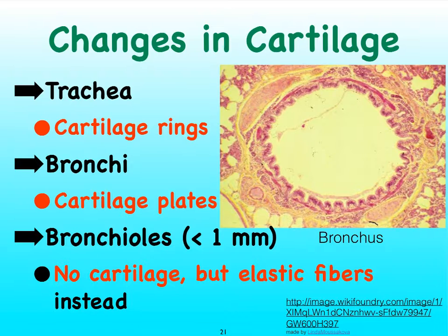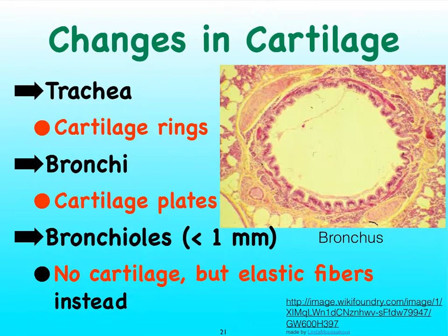We also see a change in the connective tissue, particularly the hyaline cartilage. We go from having very clear, visible-to-the-eye cartilage rings. The amount of cartilage as we go down into the bronchi begins to slowly diminish — for instance, in this picture showing a cross-section of a bronchus, we now start to see, rather than rings, just chunks or better called plates of hyaline cartilage. And by the time we get to the smaller bronchioles that are less than a millimeter in diameter, we don't have any cartilage anymore. Instead, we are starting to see much more elasticity due to the presence of elastic fibers.